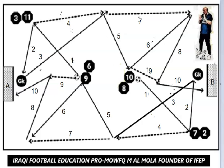Starting at the same time: number ten passes to number seven, while number nine passes to number eleven. Number ten then has to combine his play with number eleven, while number nine, after passing to number eleven, combines his play with number seven.